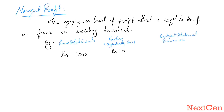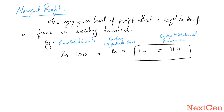The profit level just enough to cover explicit costs and opportunity costs is called normal profit. For example, if a firm buys raw materials for 100 rupees and the opportunity cost of its factory building or land is 10 rupees, then total cost is 110 rupees. If the firm earns revenue of 110 rupees, this equals its total cost — that 110 is its normal profit. If the firm earns 120 rupees, the extra 10 rupees over normal profit is called supernormal profit.